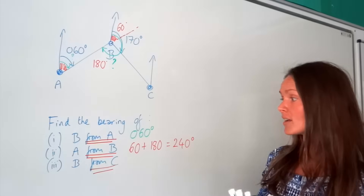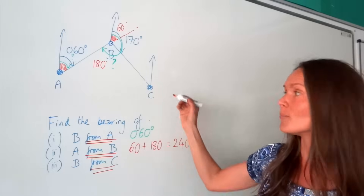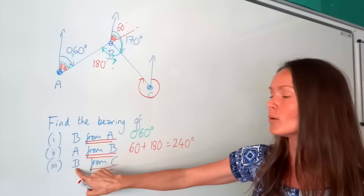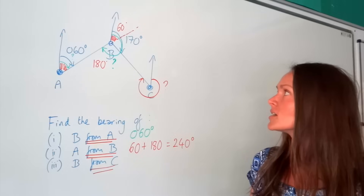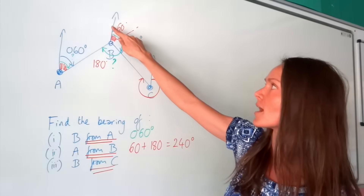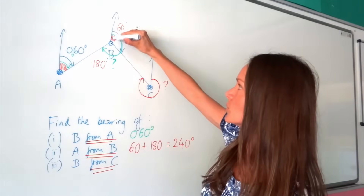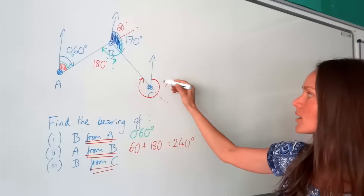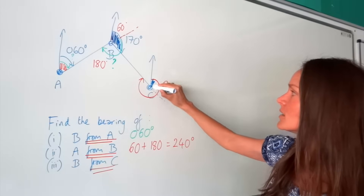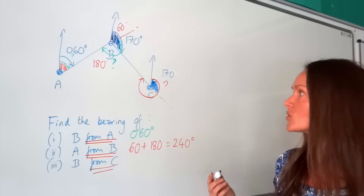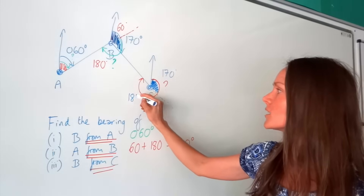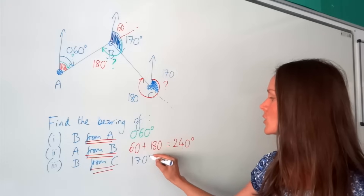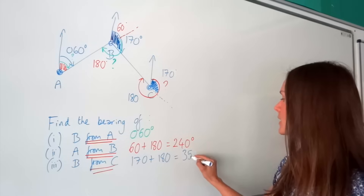Part three: find the bearing of B from C. Put your pen above point C on the north arrow and turn clockwise until you hit the line travelling to B. The angle at C is 170 degrees. Extending the line shows a corresponding angle of 170 degrees, and since angles on a straight line add up to 180 degrees, we add 170 and 180 together to get the bearing of B from C as 350 degrees.